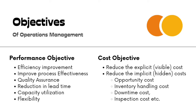What are the objectives of operations management? Broadly speaking, we can classify them into two: performance objectives and cost objectives. Under performance objectives, we look at how we can improve the efficiency and effectiveness of our process, how we can assure quality in our outputs whether goods or services, how we can reduce lead time, maximize capacity utilization, and how flexible our production process is to absorb environmental fluctuations. All these come under the performance objective.